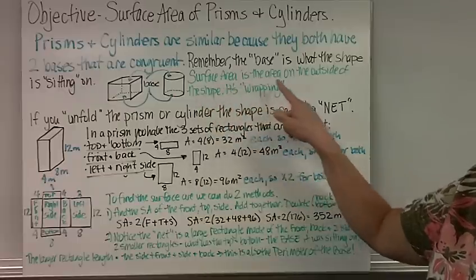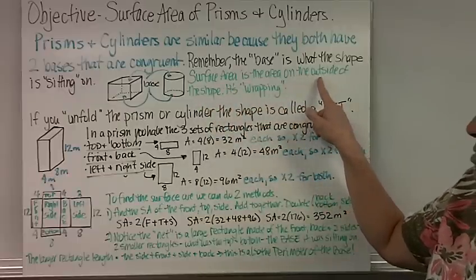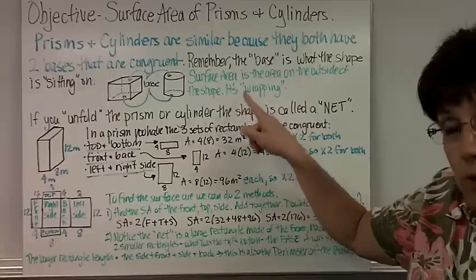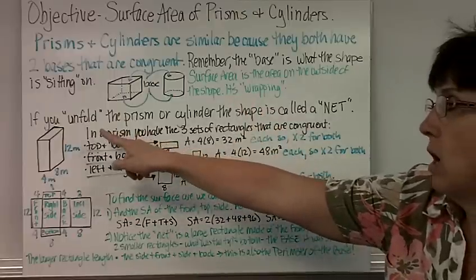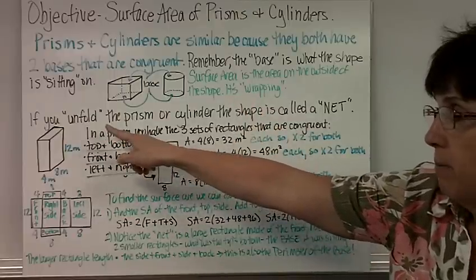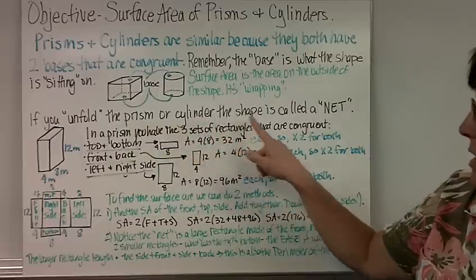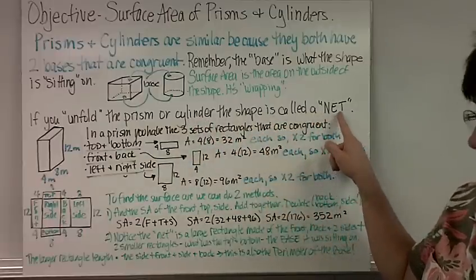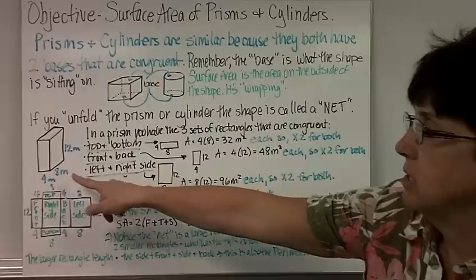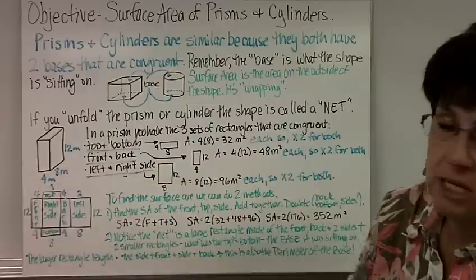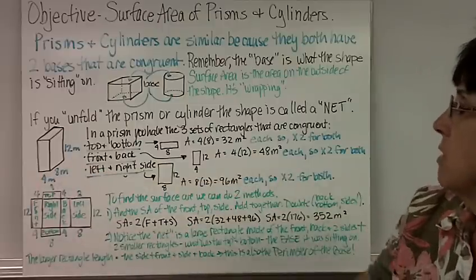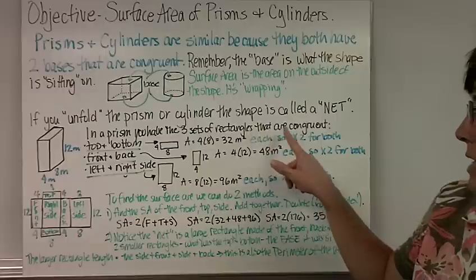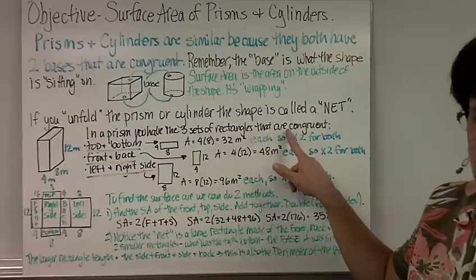The surface area is the area on the outside of the shape. It's like wrapping — if you unwrap or unfold the prism or cylinder, the shape is called a net. Here is a prism, like a cereal box. In a prism, you have three sets of rectangles that are congruent.